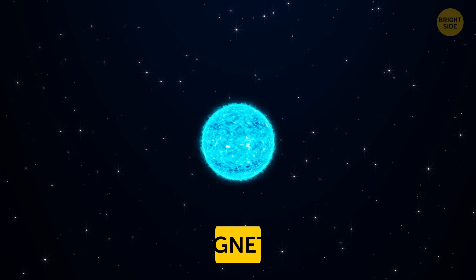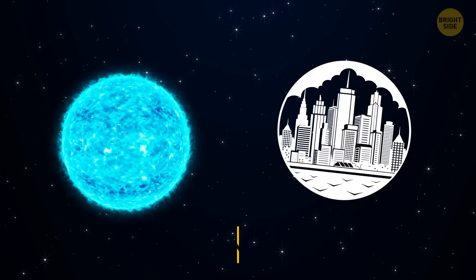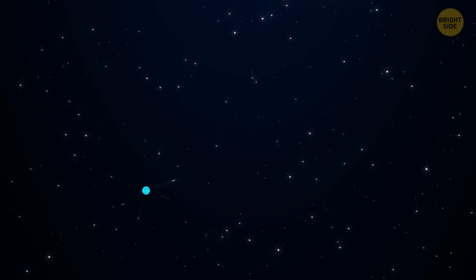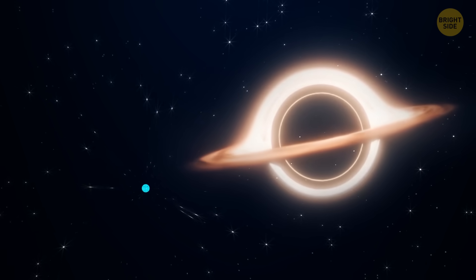This zombie star is a kind of an object called a magnetar. A super small, super heavy ball, about the size of a city, but heavier than the sun. That makes it one of the densest objects in space. Only black holes are denser.